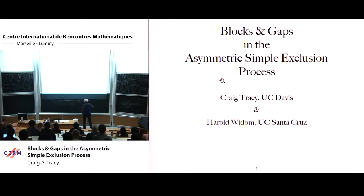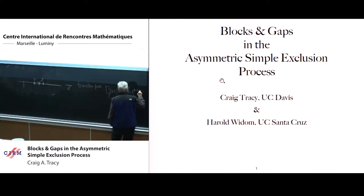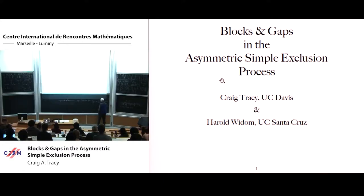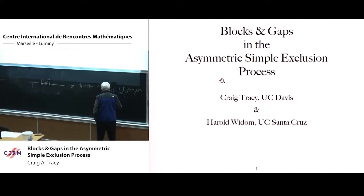It's not hard to see that the transition probability can be written as 1 over 2πi, a contour integral of C^(x-y-1) e^(t·ε(C)), where ε(C) is P/C + QC - 1. How do you get to that formula?